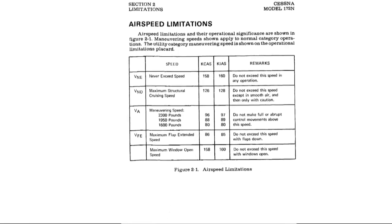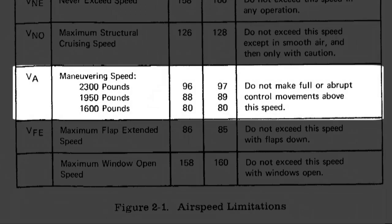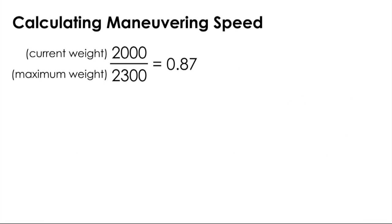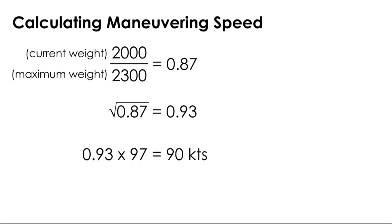The entry airspeed as required by the PTS should be at or below maneuvering speed, which varies directly with weight. Maneuvering speed is faster when heavier and slower when lighter. The POH for our Cessna 172 shows a maneuvering speed of 97 knots for the maximum weight of 2,300 pounds. Since our weight today is 2,000 pounds, maneuvering speed will be 90 knots. Here's how to do this for any weight: calculate your current weight as a percentage of the airplane's maximum weight — in today's example, 87%. Then take the square root of this number, which is 0.93, so our weight-adjusted maneuvering speed is 93% of 97 knots, which equals 90 knots.